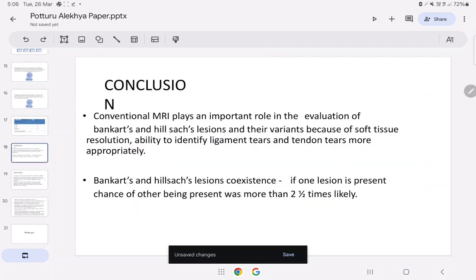Conclusion: Conventional MRI plays an important role in evaluation of Bankart and Hill-Sachs lesion and their variants because of soft tissue resolution, ability to identify ligament tears and tendon tears more appropriately.